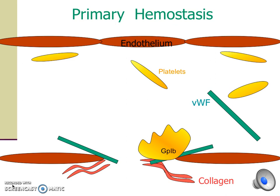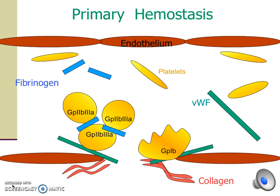Platelet secretion further activates platelets by making them aggregate to one another. Platelet aggregation occurs via surface glycoprotein 2b3a. In addition to aggregating to one another, the platelets are also binding to fibrinogen in the forming blood clot. Platelet secretion attracts and recruits more platelets to the injury site so that they too may undergo adhesion and secretion, resulting in additional platelet activation and aggregation.